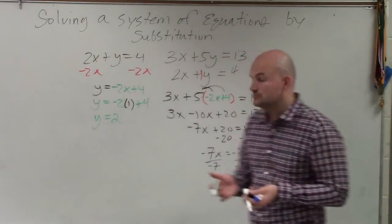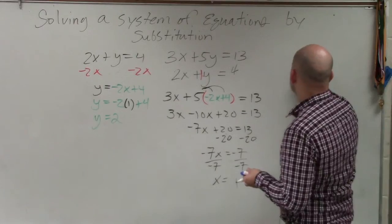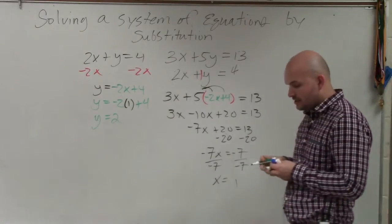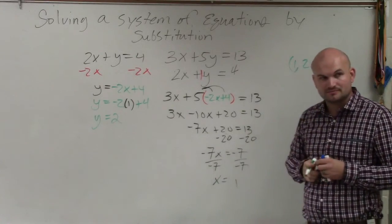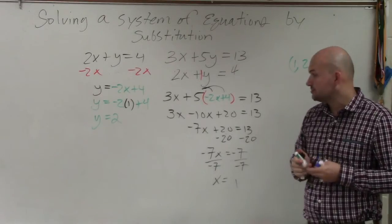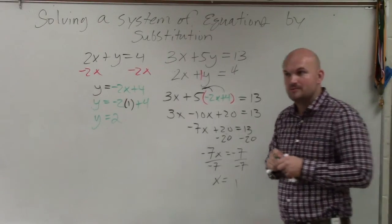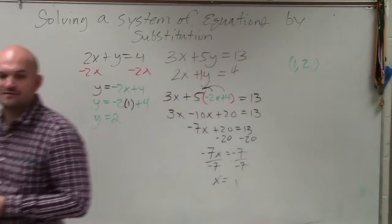So that would be your solution. Since it's a coordinate point, you could also write the solution, or since you have an x and a y, you could write it as a coordinate point 1 comma 2. So that would be the point of intersection if you were to graph that.